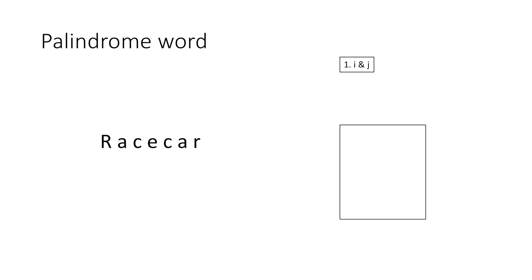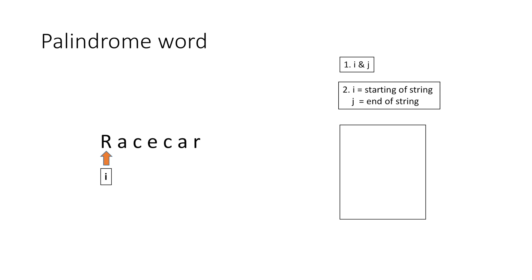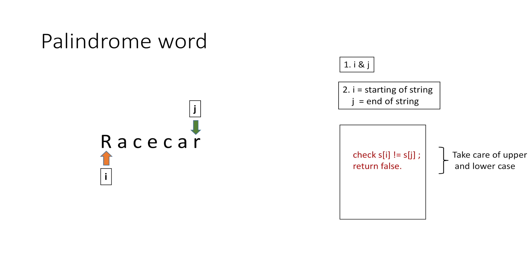For this we take two variables i and j. We point i to the starting index of the string and j to the end of the string, so i contains the index of the first R and j has the index of the last R. We check the character at index i and index j, and if they are not the same we can simply say the word is not a palindrome and return false. While checking, we have to take care of uppercase and lowercase letters because in C++, capital and small letters are treated as different.